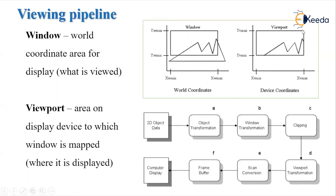That's why we perform the viewport transformation. After that, we perform the scan conversion on this part of the object when we display it on the display device. This object will become the image. Then we will store the information about that image into the frame buffer, and finally the image gets displayed on some part of the computer display. So this is about the viewing pipeline.